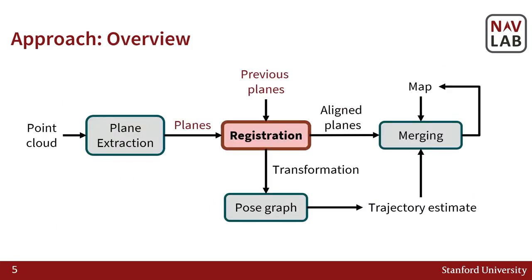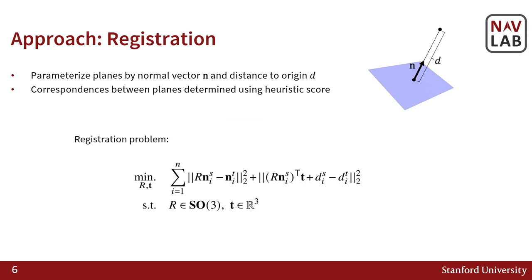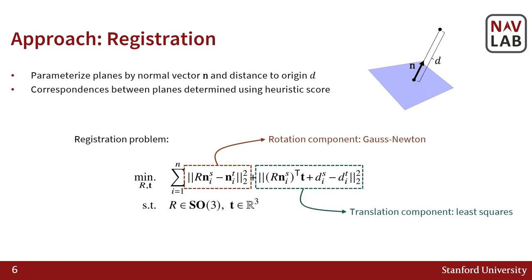The next step is to register the newly extracted planes with the previous set of planes to compute a transformation between consecutive frames. For registration, we parameterize planes by their normal vector and distance to origin, and use a heuristic score to determine correspondences. The rotation component of the registration is solved using Gauss-Newton over SO3, and the translation component is solved using least squares.